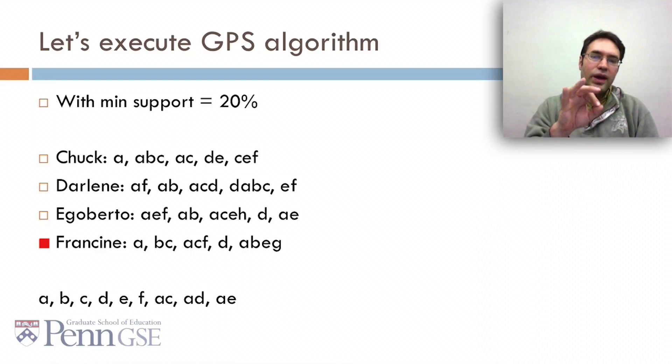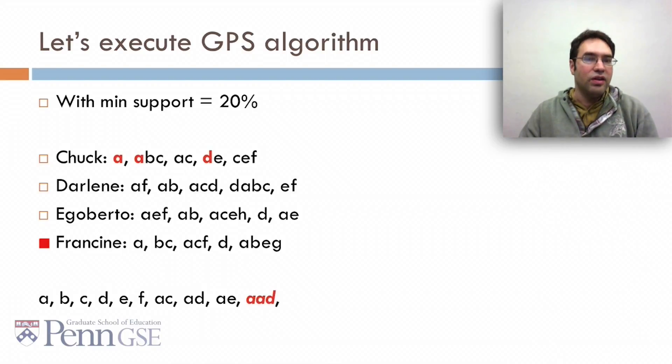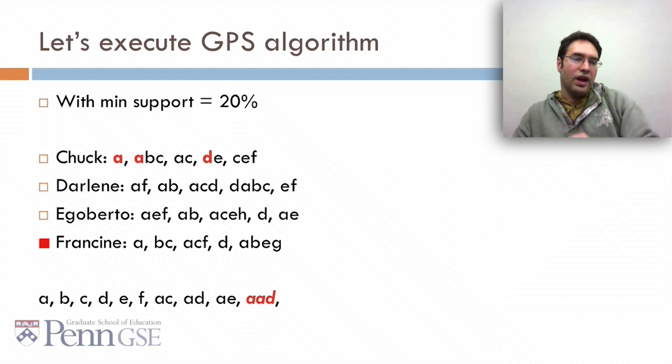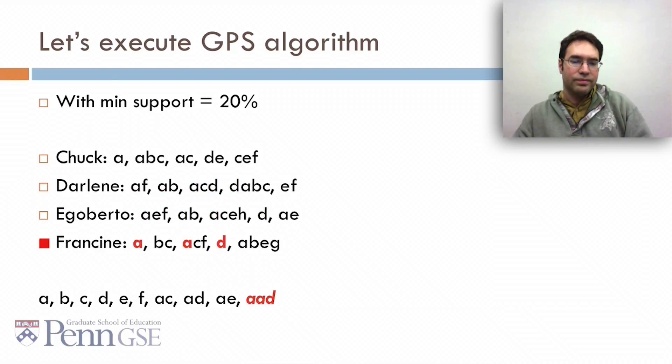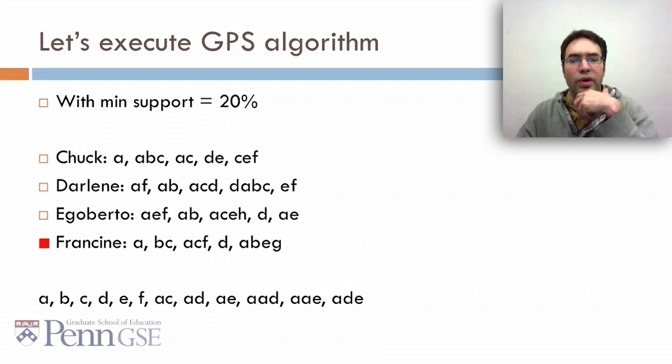Turns out AD and AE also have enough support to keep. What about triplets? We can now try combining AC, AD, and AE with A, B, C, D, and F. We get AAD. Let's look at AAD. Here's an AAD, another one, another one, and so on.